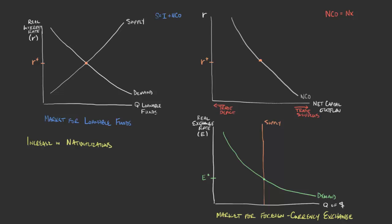What would the result be? In essence, it would be jeopardizing an investor's property. There would be more domestic investments that are risky. The main thing to consider is how this affects net capital outflow. Net capital outflow is the purchase of foreign assets by domestic residents minus the purchase of domestic assets by foreign residents. We should expect net capital outflow to increase as a result.